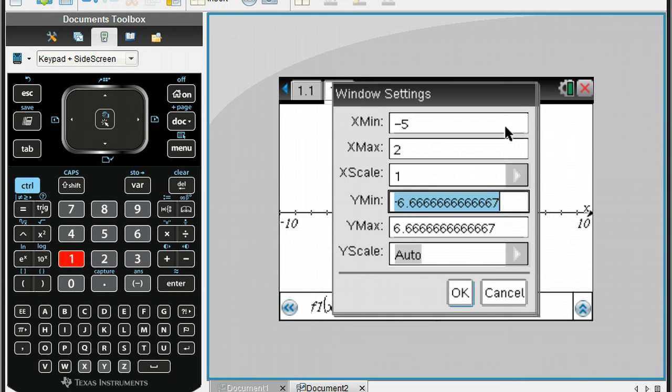Now the y minimum, we want to set that to be negative 5. Our y maximum, we want to set that to be a positive 4. Again, you can leave your y scale as auto if you want, or you can put it in as 1, or if we're using larger numbers, we want to count it by 10s maybe, or count it by 5s. That's what you put in for the y scale.